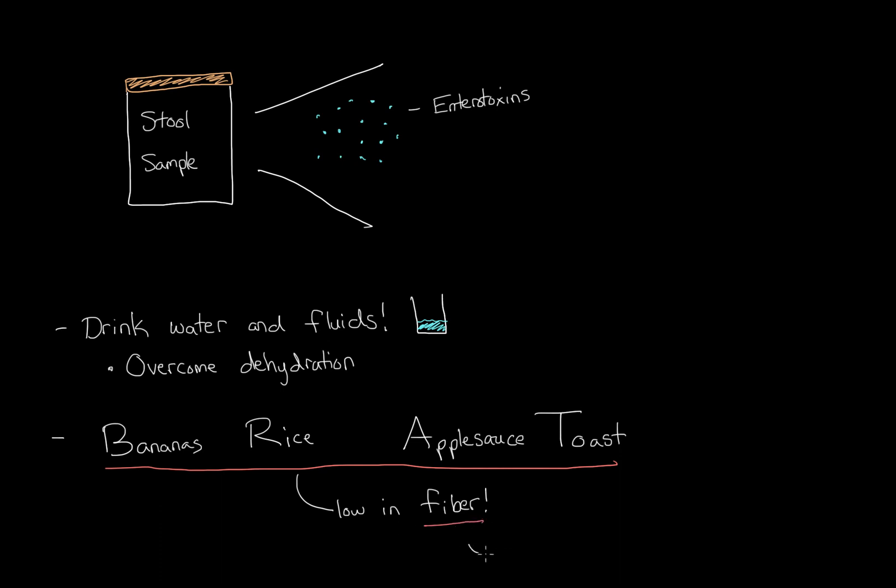Well fiber actually adds a lot of bulk to the stuff that we're processing in our gastrointestinal system. So the more bulk that you're trying to digest and absorb, the harder it is for your gastrointestinal system to really process all of that food. Therefore if you eat these foods that are low in fiber, you won't be adding as much bulk, and your system will be able to process them more easily.